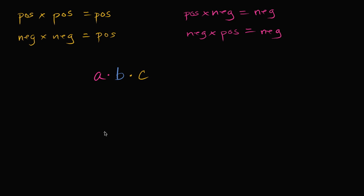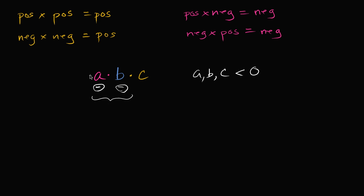What would happen if I told you that a, b, and c were all negative? If they were all negative, what is this product going to be equal to? Well, you're going to have a negative times a negative — so a times b, if you do that first, is going to give you a positive. But then you're going to multiply that positive times c, which is a negative. So you're going to have a positive times a negative, which is going to be a negative.